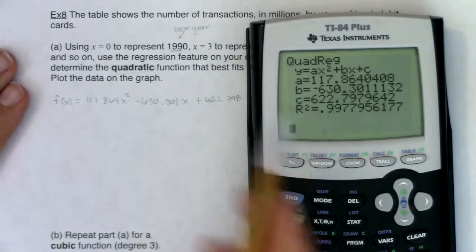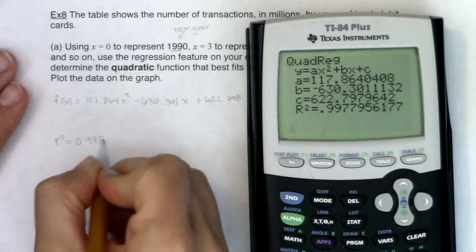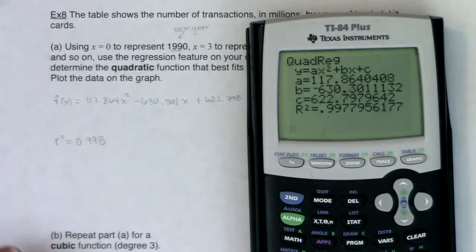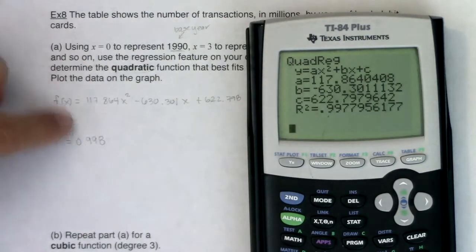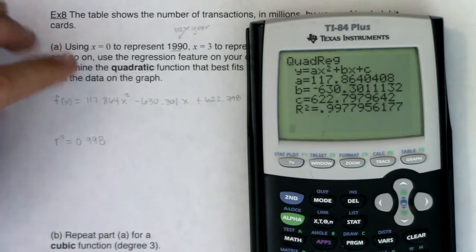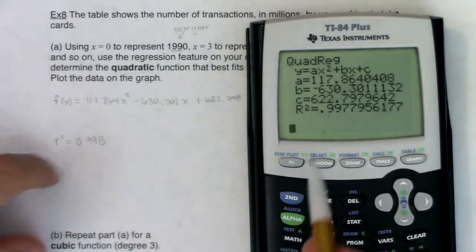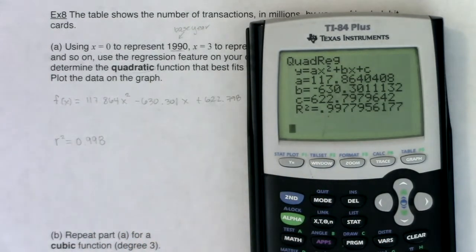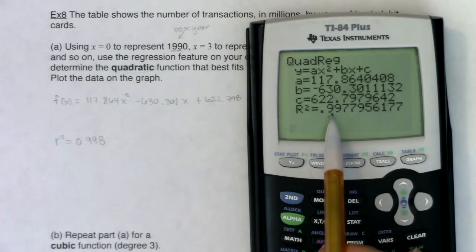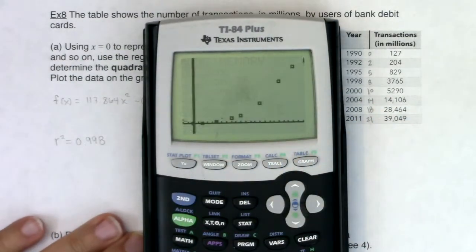So f of x would be equal to 117.864x squared minus 630.301x plus 622.798. I'm getting my quadratic model from my calculator. Now, I want us to take note of this R squared number. It's going to come into play a little bit later.